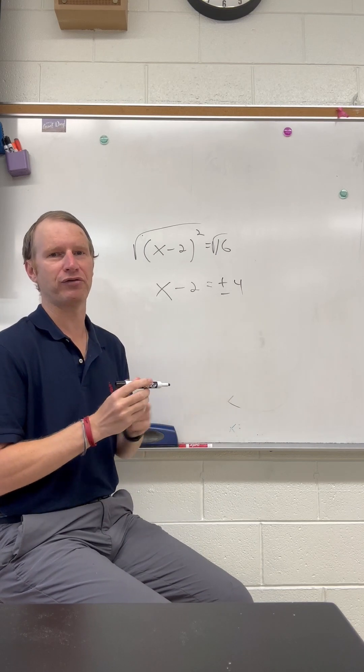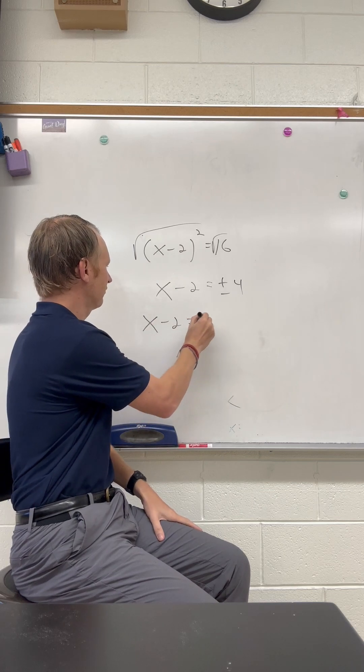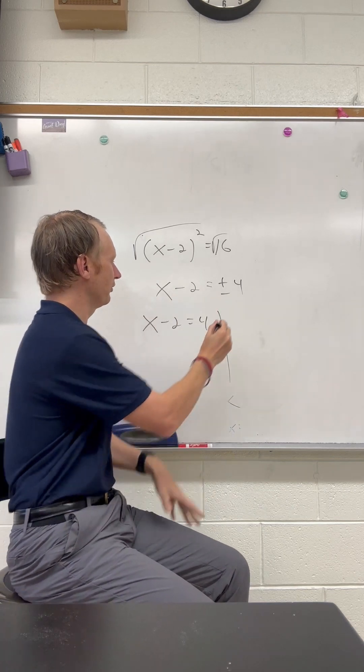Now we can write two equations from this and get both answers. So we have x minus 2 equals positive 4 as one equation, and then the second equation is x minus 2 equals negative 4.